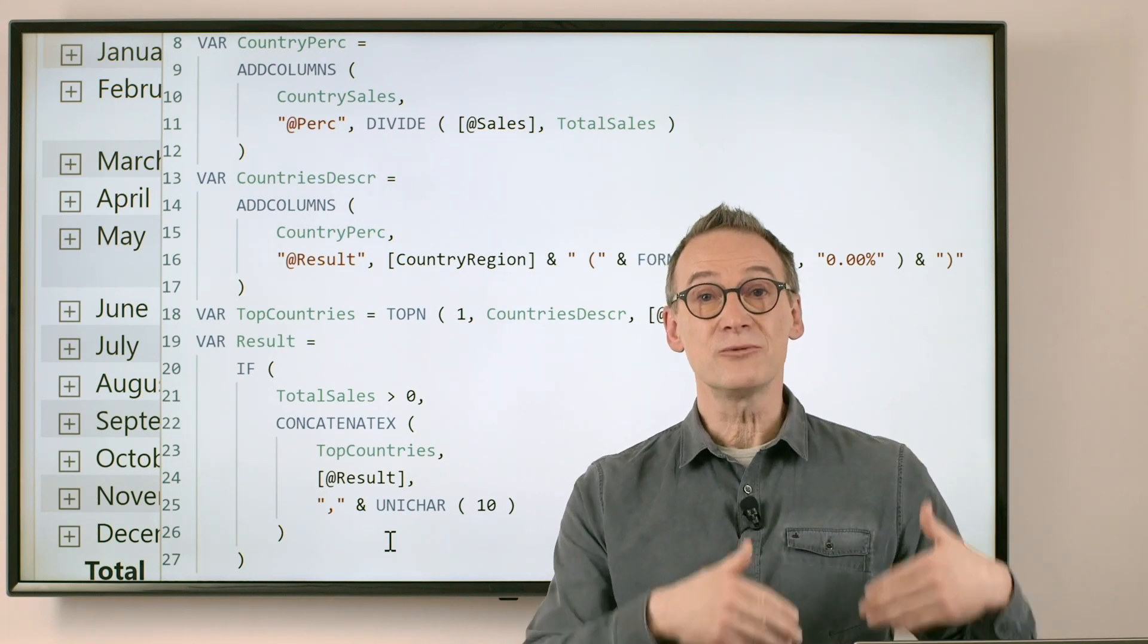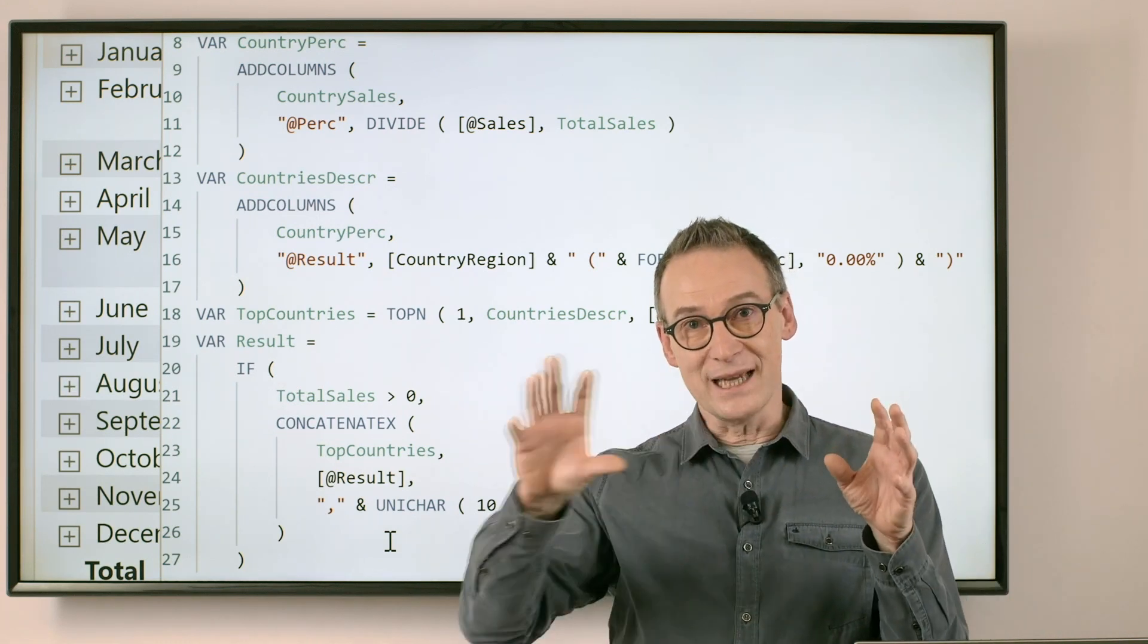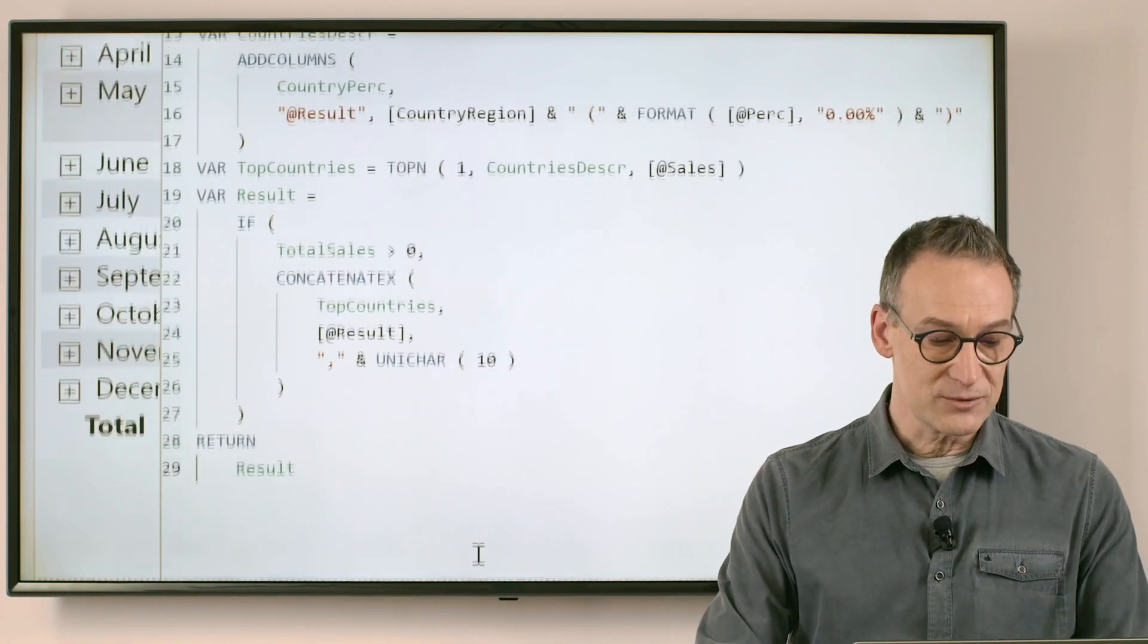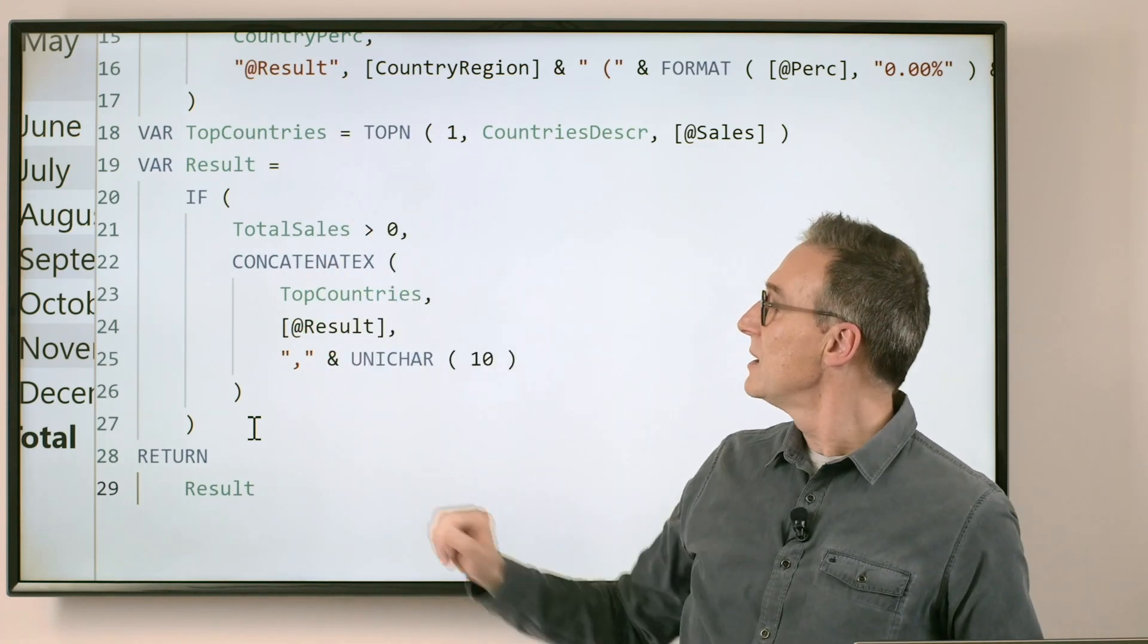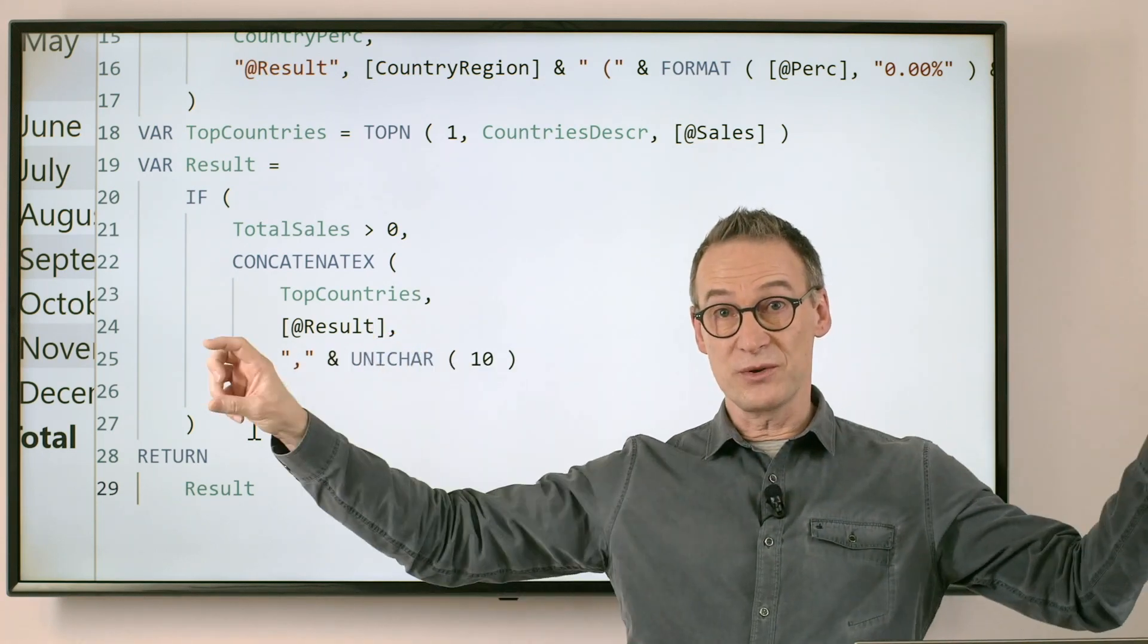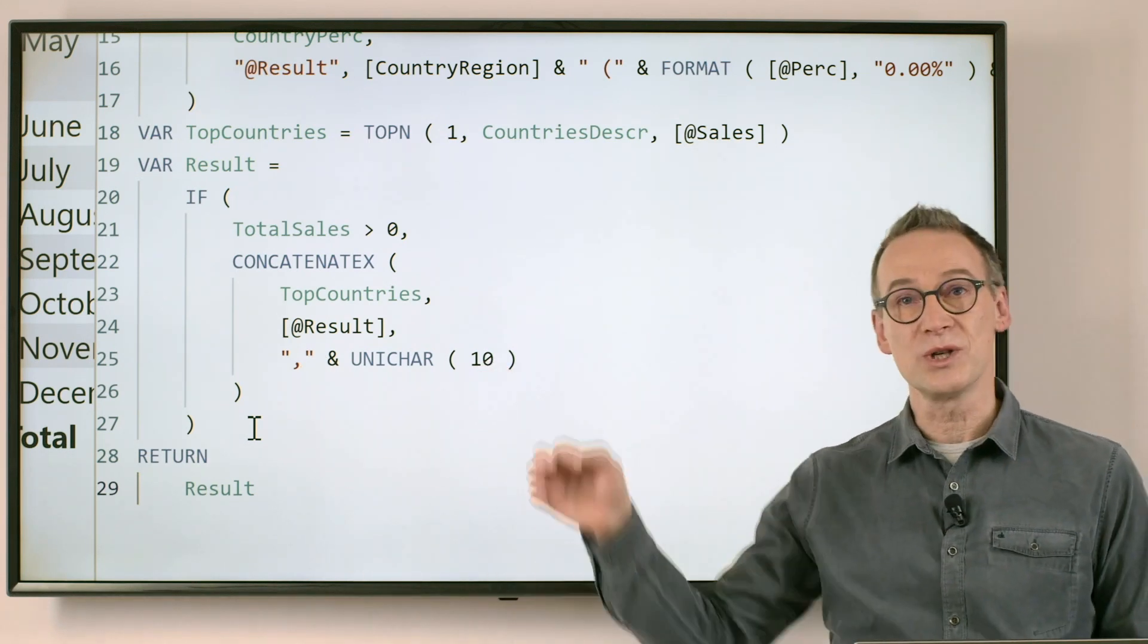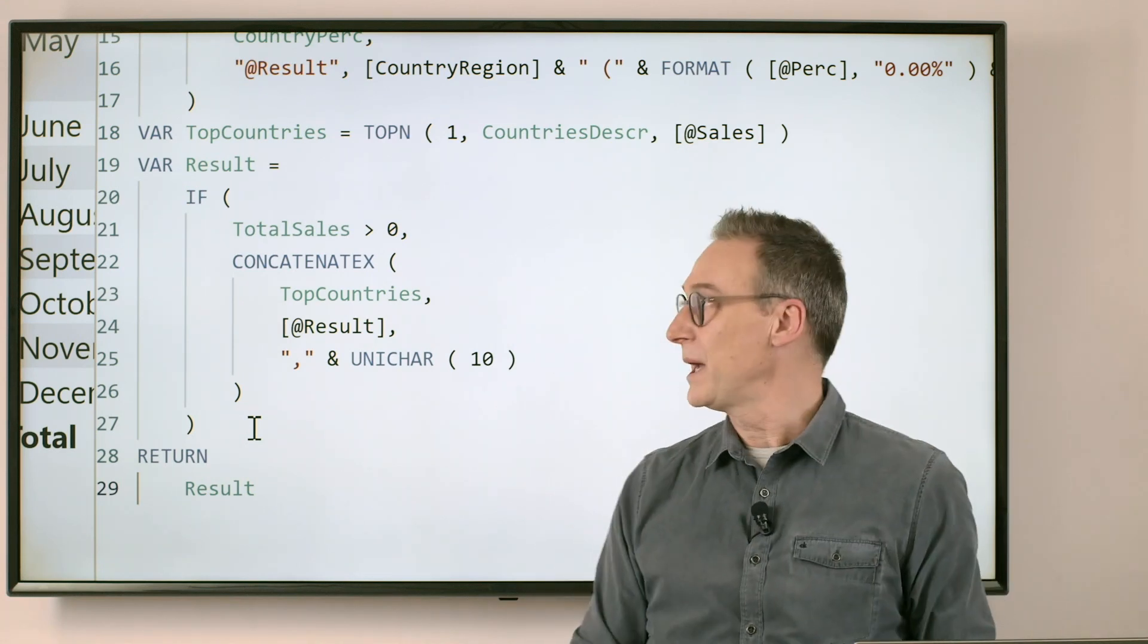Concatenate text lets me iterate over this table and concatenate strings, which are the result of the expression that I specify here. So the final result just uses concatenate text over top country. We take the result, which is the description that we want to produce. And as the separator, we use a comma and unichar 10, which is the new line. So all the ties will be separated by a new line.